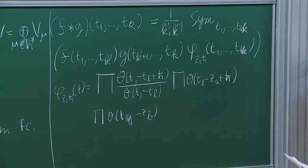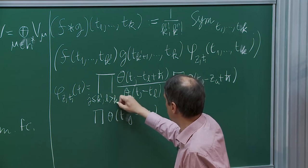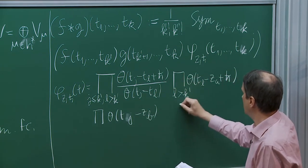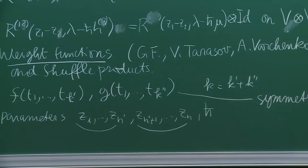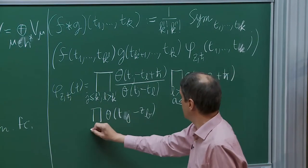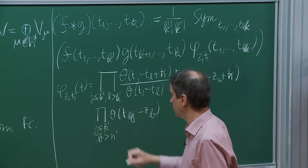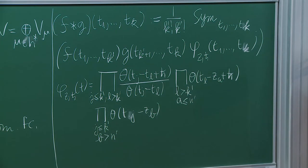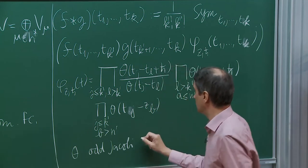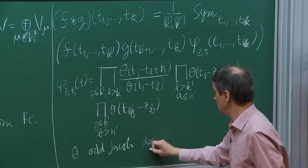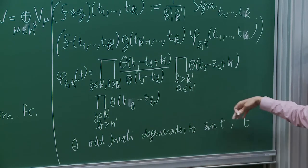Theta is the odd Jacobi theta function. In the elliptic case it is the odd Jacobi theta function; it degenerates to sine(t) in the trigonometric case and to t in the rational case. We fix an elliptic curve written as C/(Z + tau Z). This theta function has two periods, 1 and tau. If you let tau go to infinity, you get the trigonometric limit; if you let 1 go to infinity, you get the rational limit.